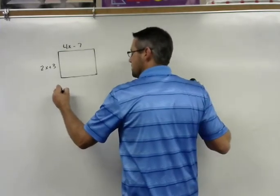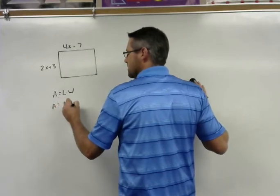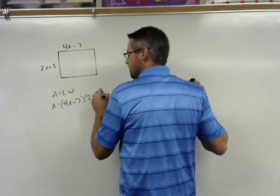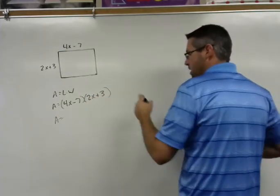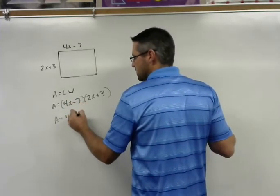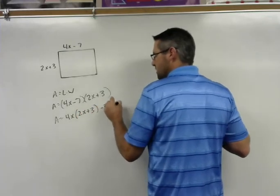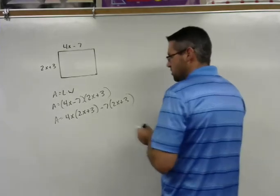So area equals length times width. So in this case, it's going to be 4x minus 7 times 2x plus 3, and then we're going to show the work. We've talked about multiplying binomials now, so we expand that out. We rewrite that as 4x times 2x plus 3, and then minus 7 times 2x plus 3, and then we go ahead and distribute that.